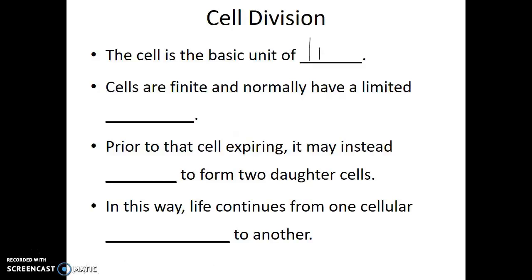The cell is the basic unit of life — the smallest unit that has all the characteristics of life. And these cells, because they are living, are finite. They have a limited lifespan. Any one individual cell is only going to live for so long, and then that cell will either die, or that cell will divide. So prior to that cell expiring or dying, it may instead divide to form two daughter cells. In this way, life continues from one cellular generation to another.